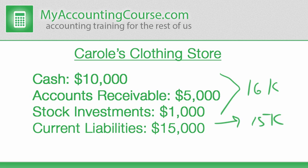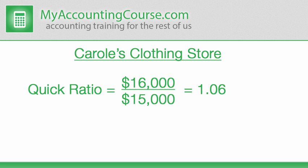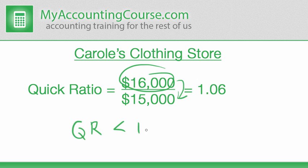Carol's clothing store has a quick ratio, or acid test ratio, of 1.06. This means that Carol has more than enough quick assets to cover all of her current liabilities. If Carol's quick ratio were less than one, it would mean that she didn't have enough quick assets to cover all of her upcoming bills.